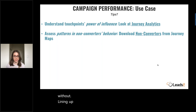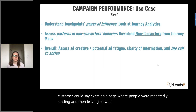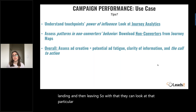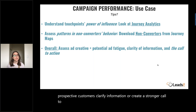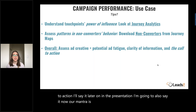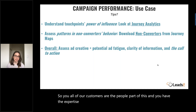The next step: go to the journey maps report and download that non-converters report, with specific attention to the page view information. Though conversions for this customer are trending up, we really want to improve the overall signup and understand why interactions were trending down. Looking at non-converters could help this customer understand where on the site people were leaving without signing up and analyze any patterns. With this knowledge, the customer could examine a page where people were repeatedly landing and leaving, then make decisions about how to better grab prospective customers, clarify information, or create a stronger call to action.